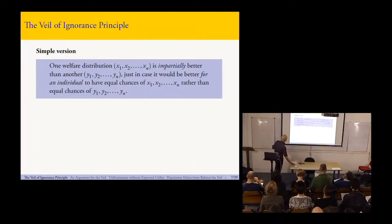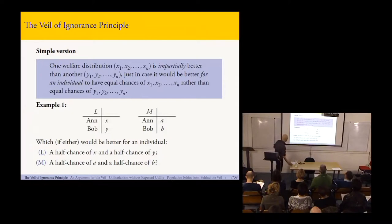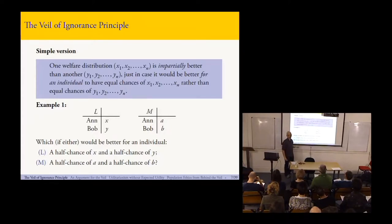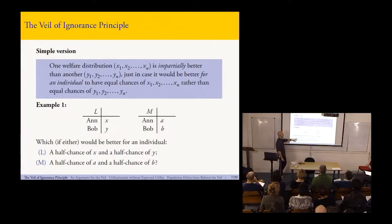The simple version says: one welfare distribution x1 through xn is impartially better than another, y1 through yn, just in case it would be better for an individual to have equal chances of x1 through xn rather than equal chances of y1 through yn. Here's an example: in lottery L, Ann gets welfare level x and Bob gets welfare level y, with no uncertainty. In M, Ann gets a and Bob gets b. To compare these, we ask which would be better for an individual — a half chance of x and a half chance of y, or a half chance of a and a half chance of b?